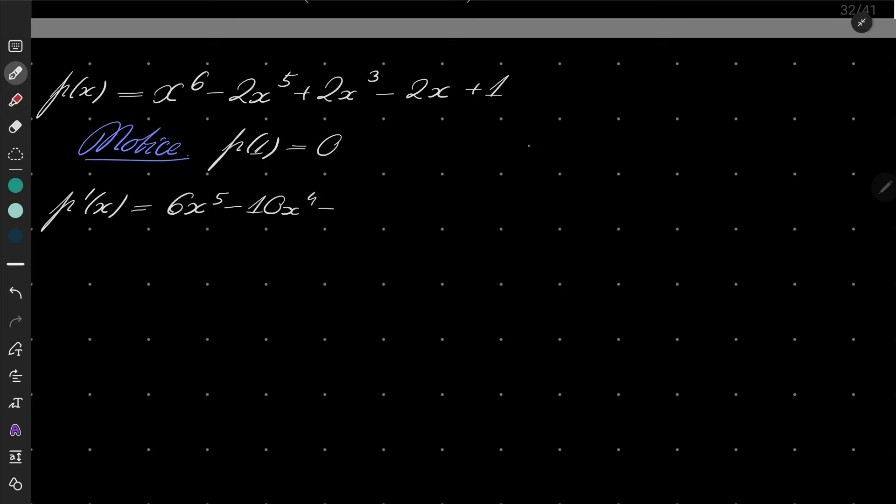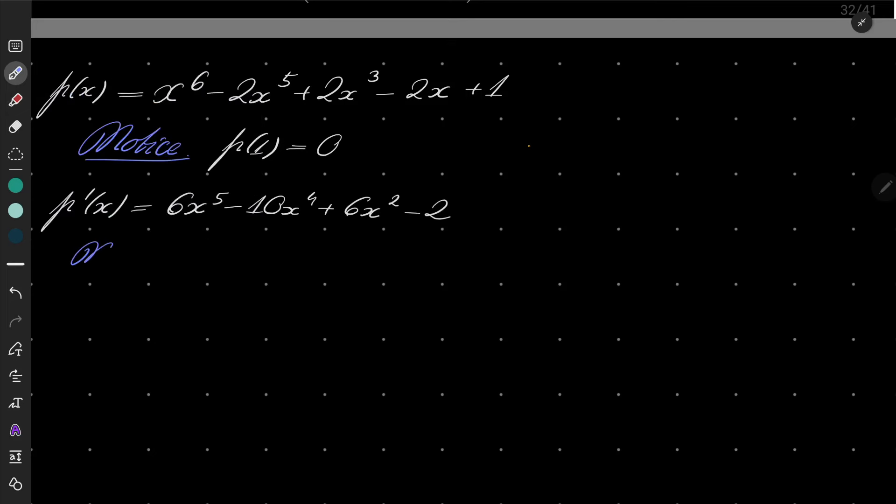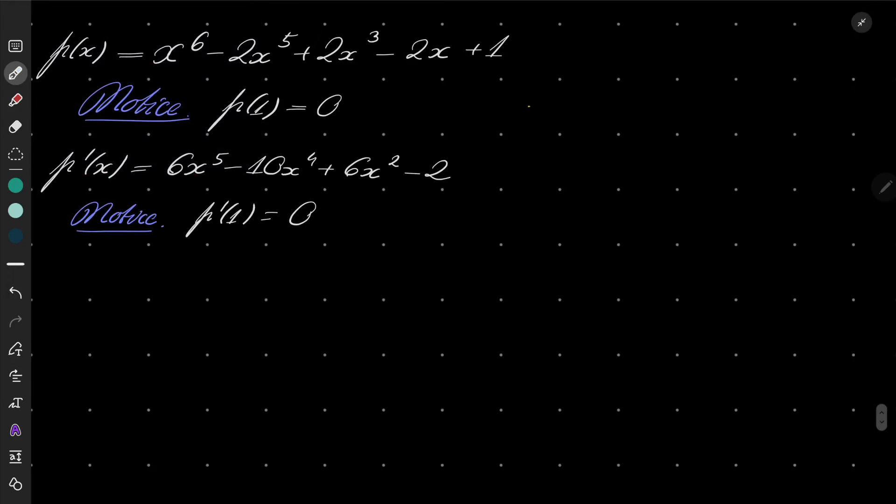It's the following. Notice again that p prime of 1 is also 0, so I know that my root 1 is a root of my polynomial of degree at least, of multiplicity at least 2.